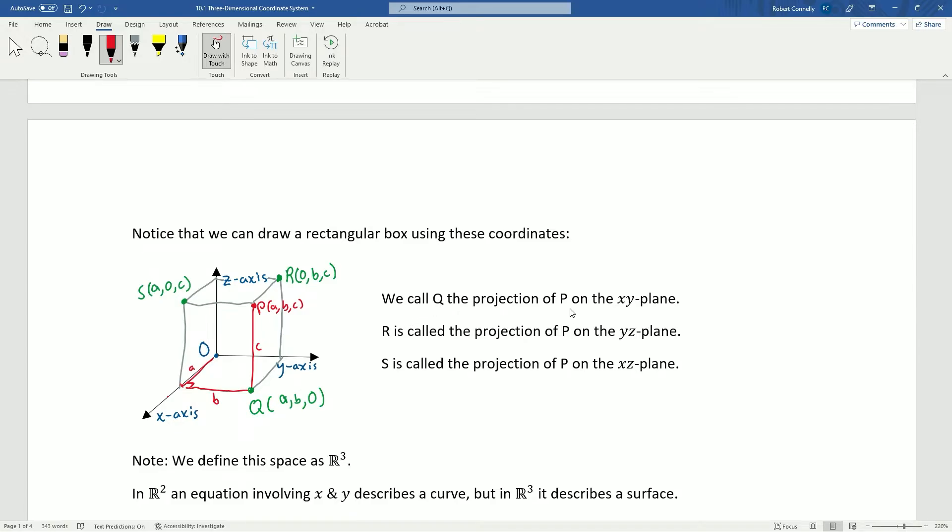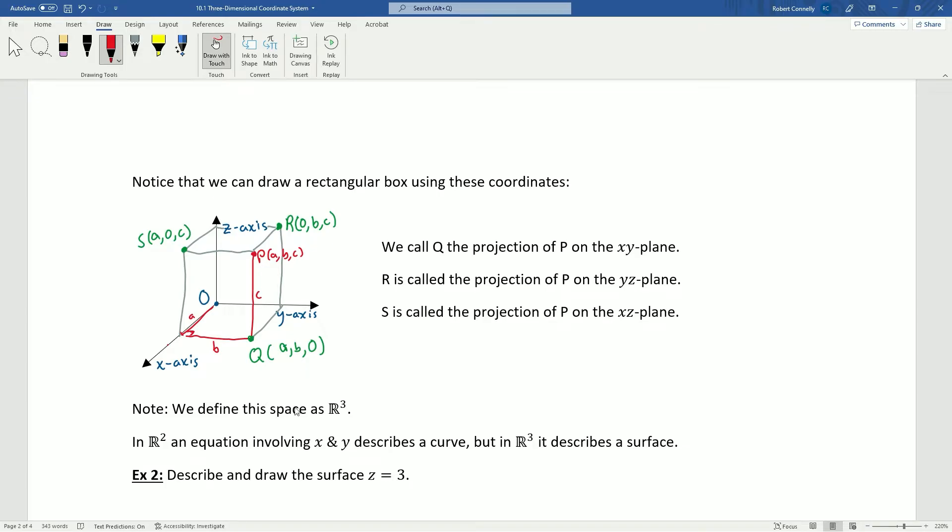So, as I said, we call Q the projection of P on the XY plane. So, Q is the projection of P on XY. R is the projection of P on the YZ plane. So, we're projecting this onto the YZ plane. And S is the projection of P on the XZ plane. So, this is going to come back into play in just a moment. But for now, let's just take note of a couple quick things. That we define this space as R³, meaning the set of real numbers in three dimensions. Now, in R², an equation involving X and Y describes a curve. But when we refer to an equation like that in R³, it's going to describe a surface instead.